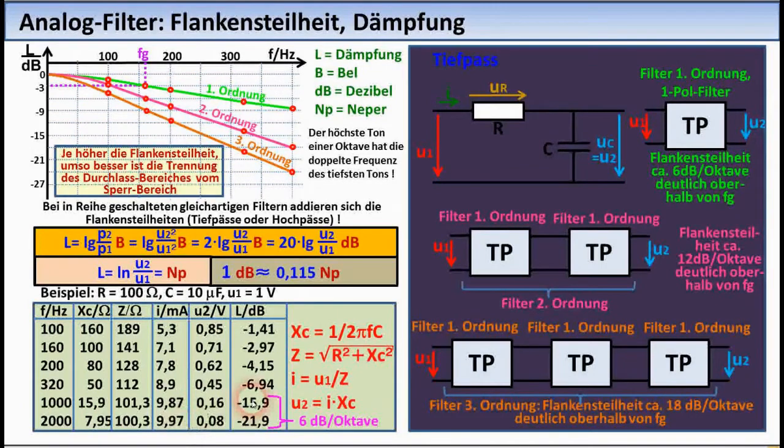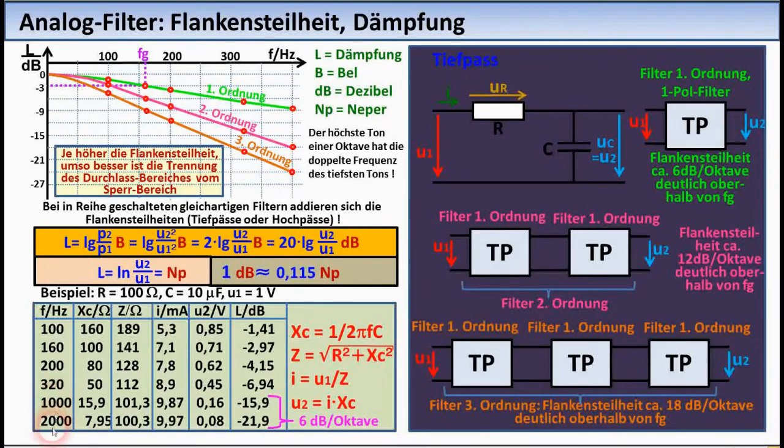The attenuation is then finally 6 dB per octave, because this distance 1000 and 2000 Hertz is exactly one octave, and the difference between the two attenuation values is exactly 6 dB, and that is the typical attenuation, the typical steepness that can be achieved with a first-order filter.